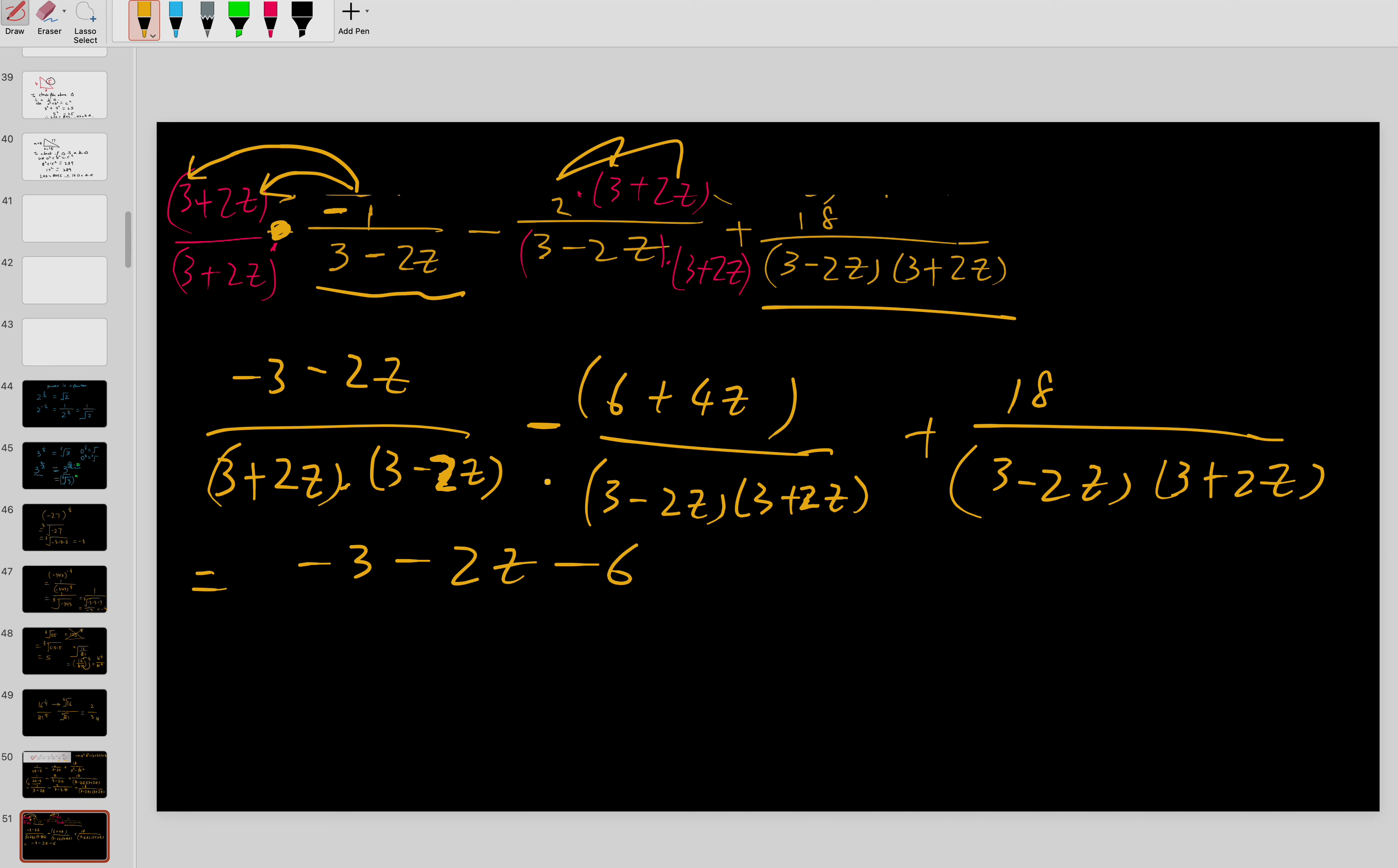You need a bracket because you're subtracting the whole thing, not minus the 6 only. Over here you just underline similar terms: minus 3 minus 6 plus 18, so minus 9 plus 18 is 9. This one, minus minus is 6z.